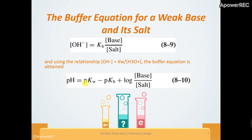If the buffer is a weak base with its conjugate acid (salt), we use Kb and express it in terms of hydroxyl ion concentration: pOH equals pKb plus log of salt over base. We then remember that pOH equals pKw minus pH, so we can convert to get the final pH.